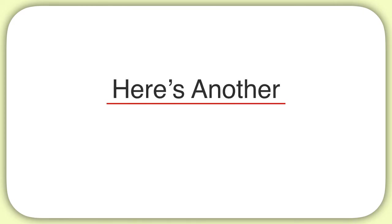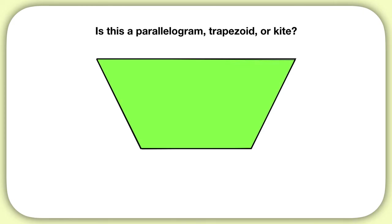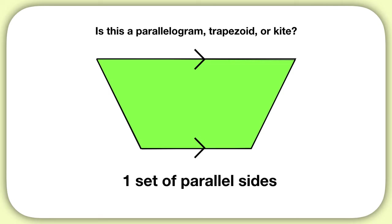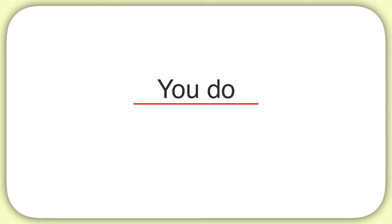Here's another one to practice with. Is this a parallelogram, trapezoid, or kite? How many sets of parallel sides does this shape have? You can see the top and the bottom are parallel — they move in the same direction — but no other sides are. So this shape has only one set of parallel sides. What is the name of a shape that has one set of parallel sides? We call it a trapezoid.